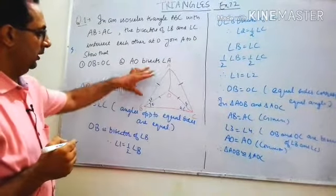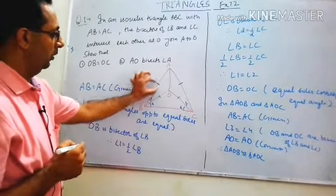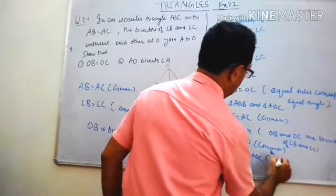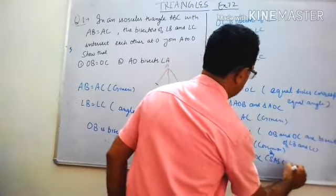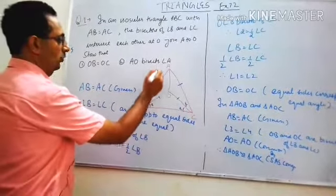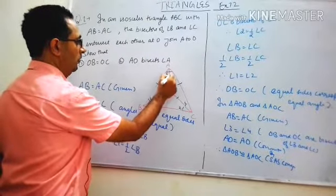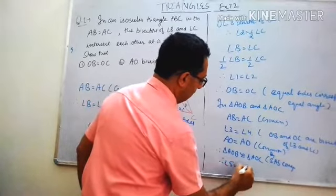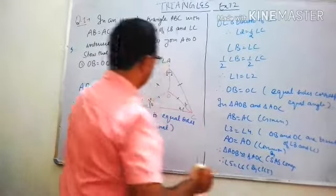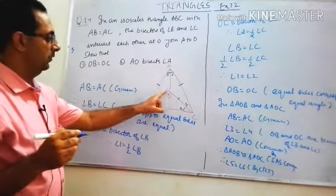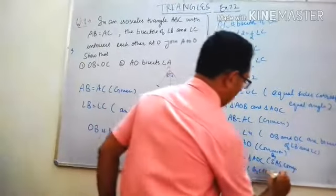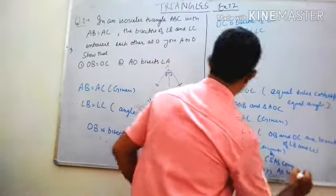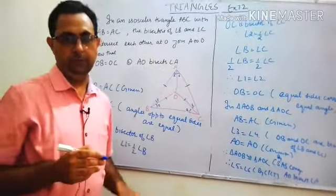AO is equal to AO, that is common. Therefore triangle AOB is congruent to triangle AOC by SAS congruency. Since both triangles are congruent, angle 5 is equal to angle 6 by CPCT. Therefore AO bisects angle A — hence proved.